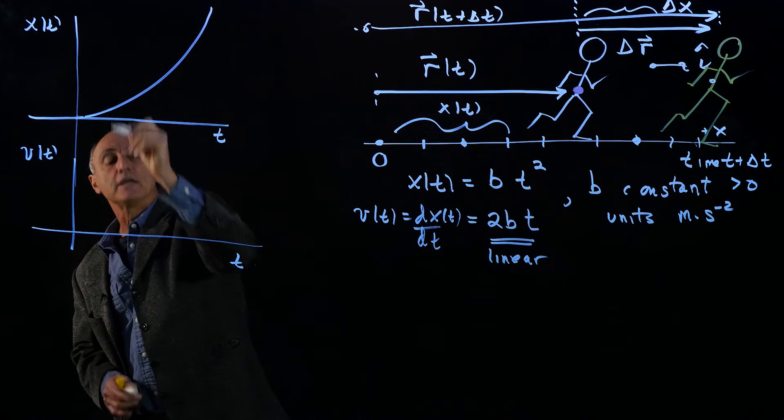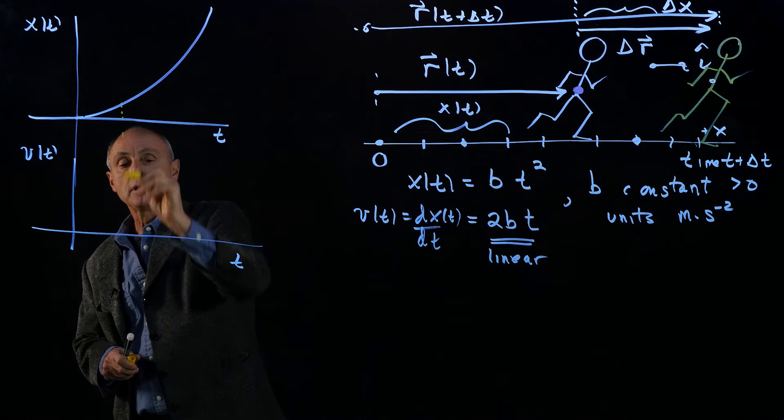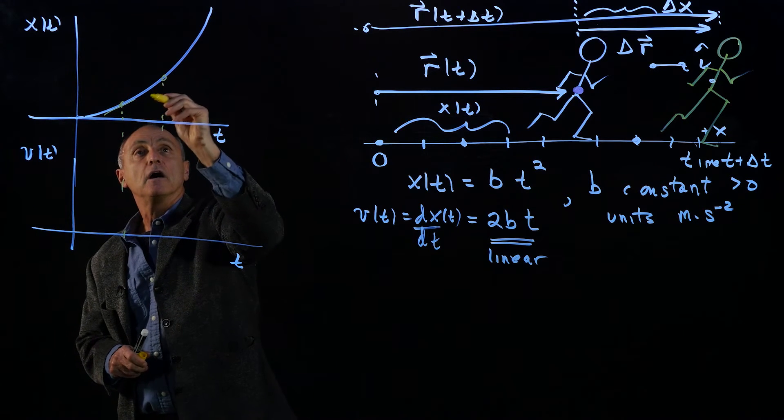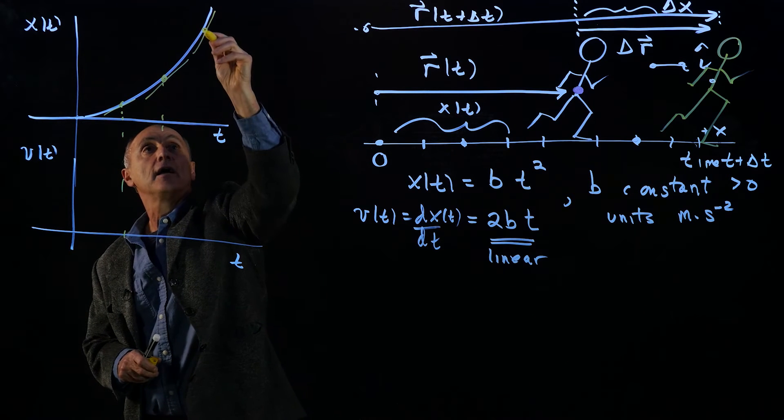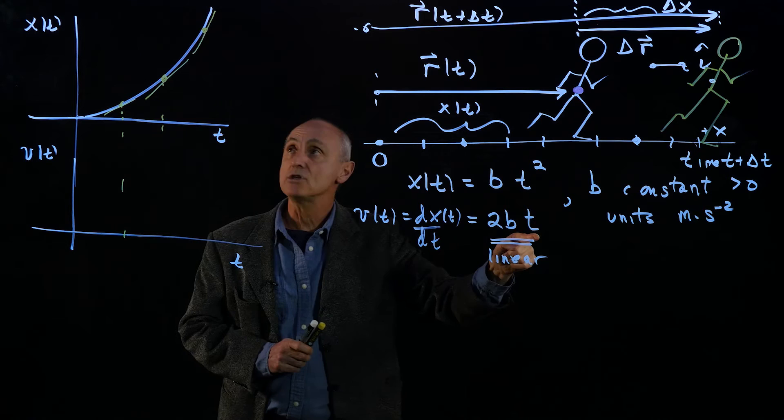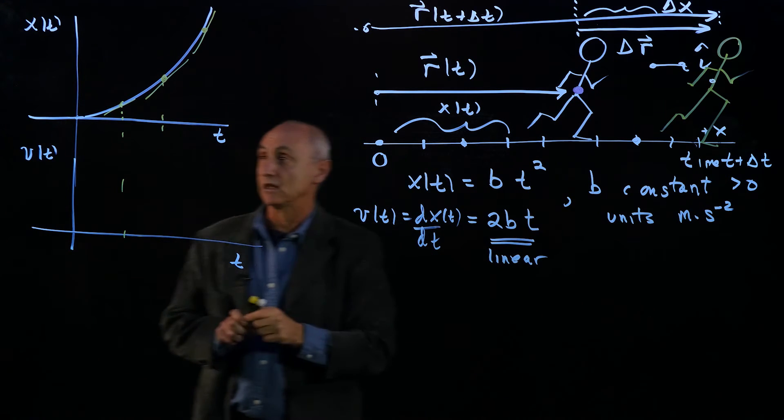Remember, our velocity at any given time corresponds to the slope of the tangent line to the position function. And you can see that slope is increasing. Now, you wouldn't know from this graph, but if you did plot t squared, it's increasing linearly.